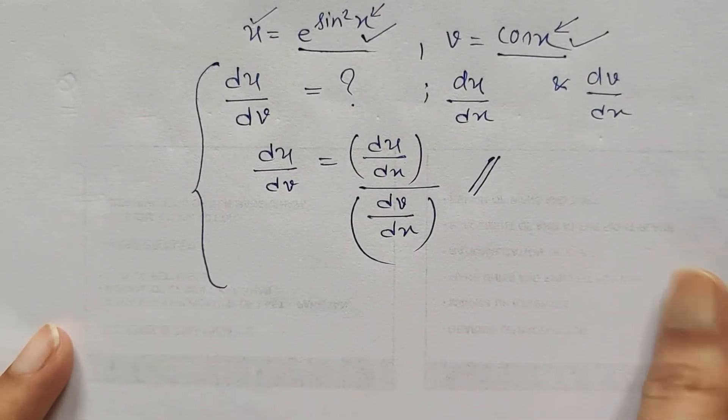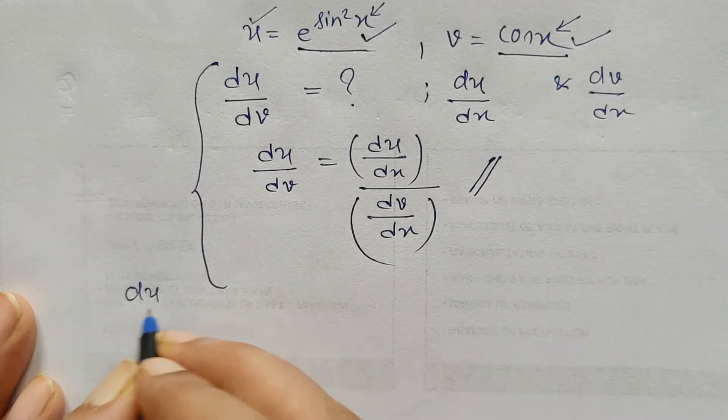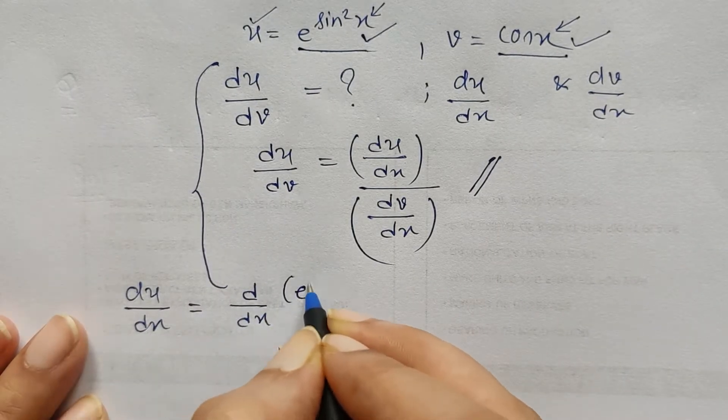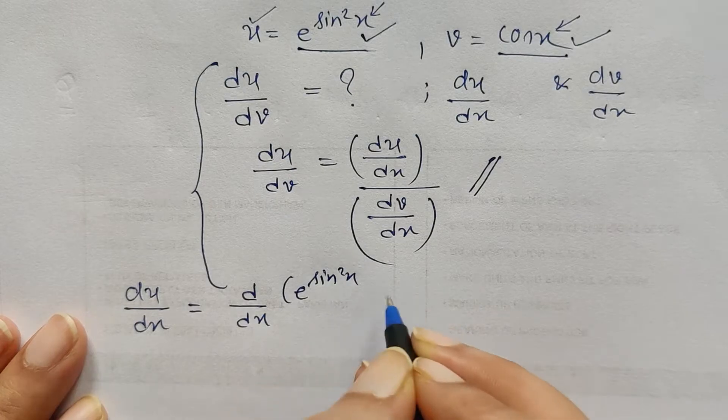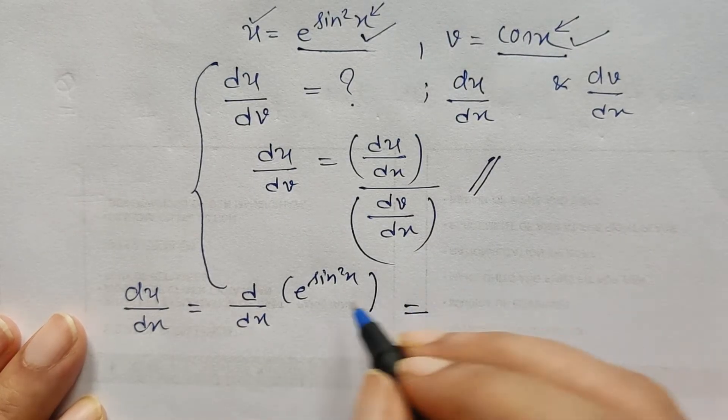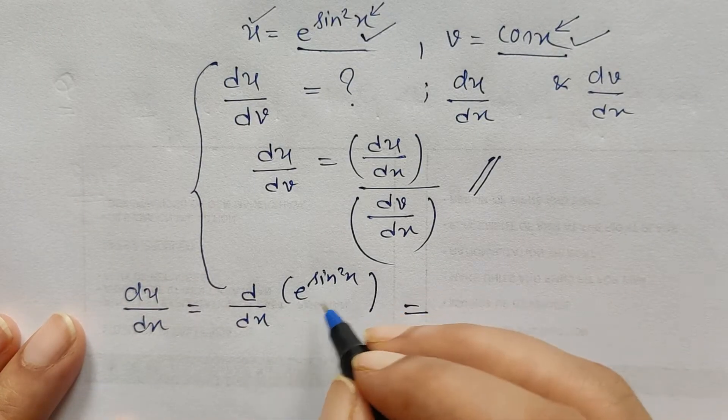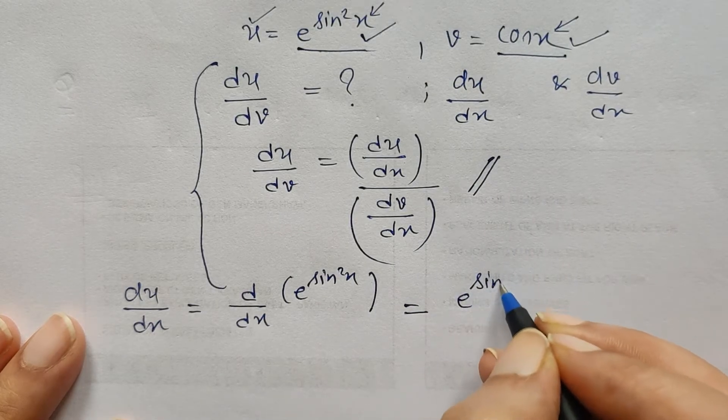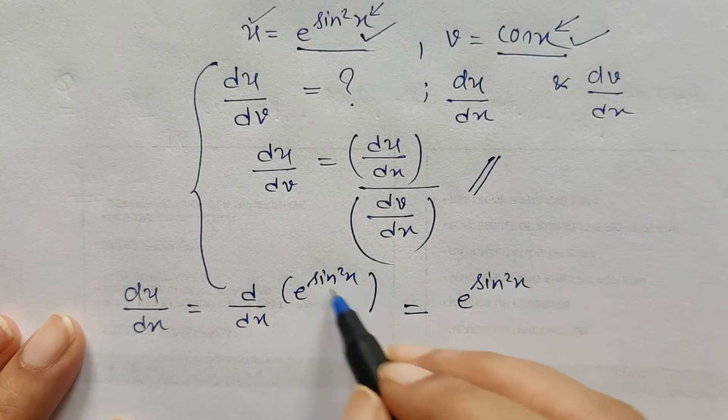So if I find out du by dx, here du by dx means we are differentiating e to the power sine square x with respect to x. So here I get derivative of e to the power x is e to the power x only. So I have e to the power sine square x only, but since it can further be differentiated, so it is 2 sine x into - sine x derivative is cos x.